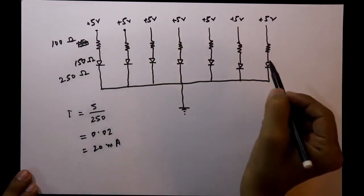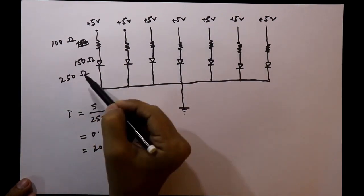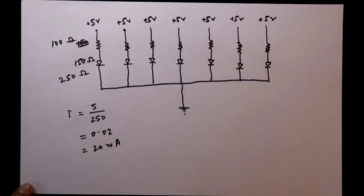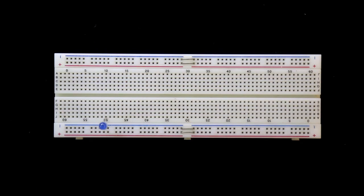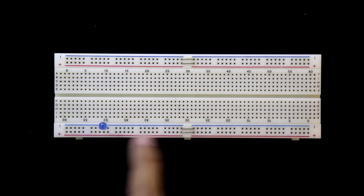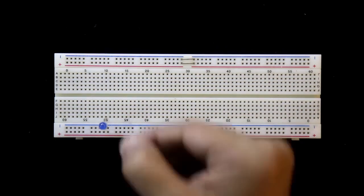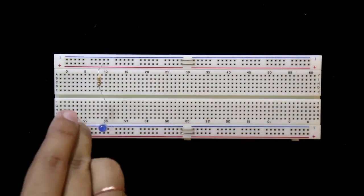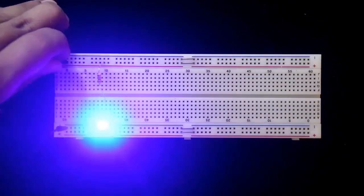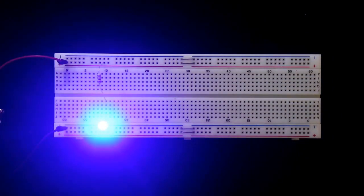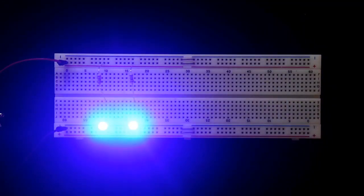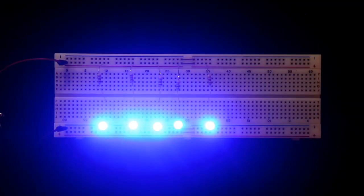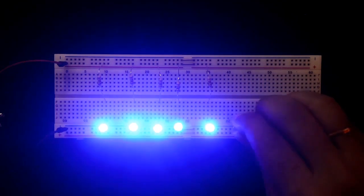Even if you remove one LED, it will not affect the others because each has its own external series resistor. In the practical demonstration: the negative pin of each LED is connected to the negative rail, and the positive pin is connected through a 100-ohm resistor to the positive rail. As more LEDs are connected one by one, the brightness does not change. In this circuit we do not need 1-watt or 2-watt resistors.